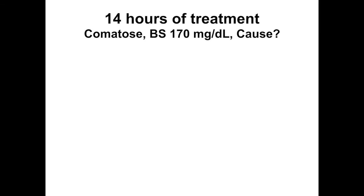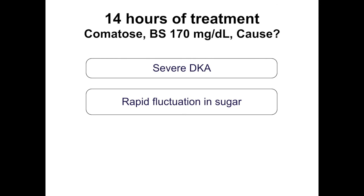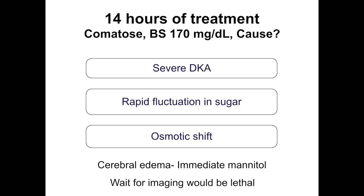At 14 hours, the child suddenly becomes comatose with blood sugar of 170. In a child with severe DKA with rapid blood sugar fluctuation and significant osmotic shifts, the most likely diagnosis is cerebral edema. Check for hypoglycemia first and correct it if present. Otherwise, immediately administer mannitol — do not wait for neuroimaging, as that could be lethal. Once stabilized, if not improving, consider other possibilities and proceed to neuroimaging.